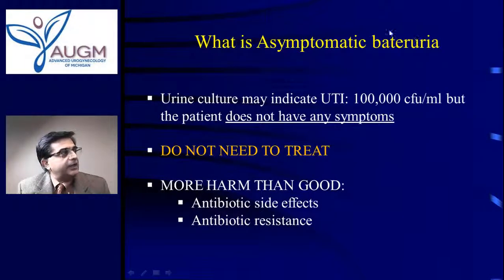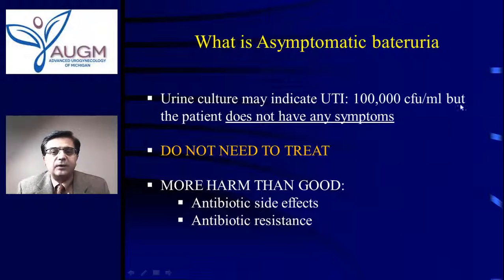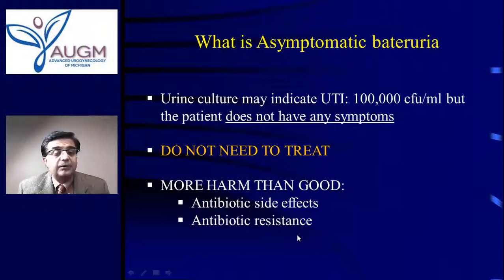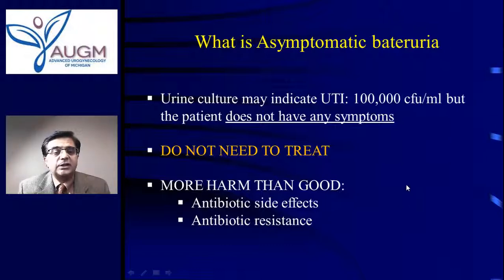Let me end with a few words on asymptomatic bacteriuria. Suppose you go to a doctor for a physical and the urine comes back with 100,000 colony-forming units per mL — by definition, a bladder infection. But if the patient does not have symptoms, do not treat. If I treat you, I could do more harm than good: the collateral damage increases, plus antibiotic resistance — the bacteria in the colon will learn to resist that antibiotic, so when you really need it for an actual bladder infection, it won't work. If you do not have symptoms, do not take an antibiotic.